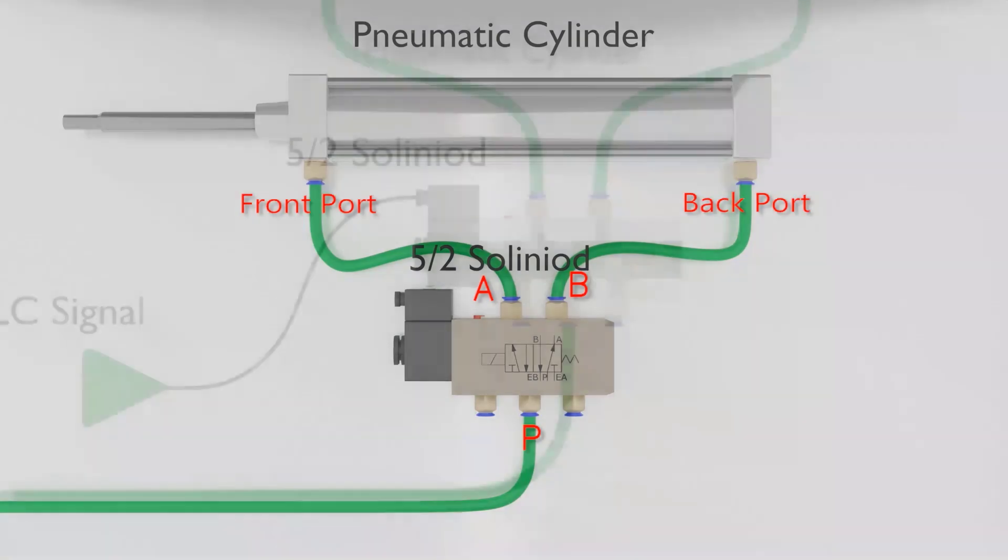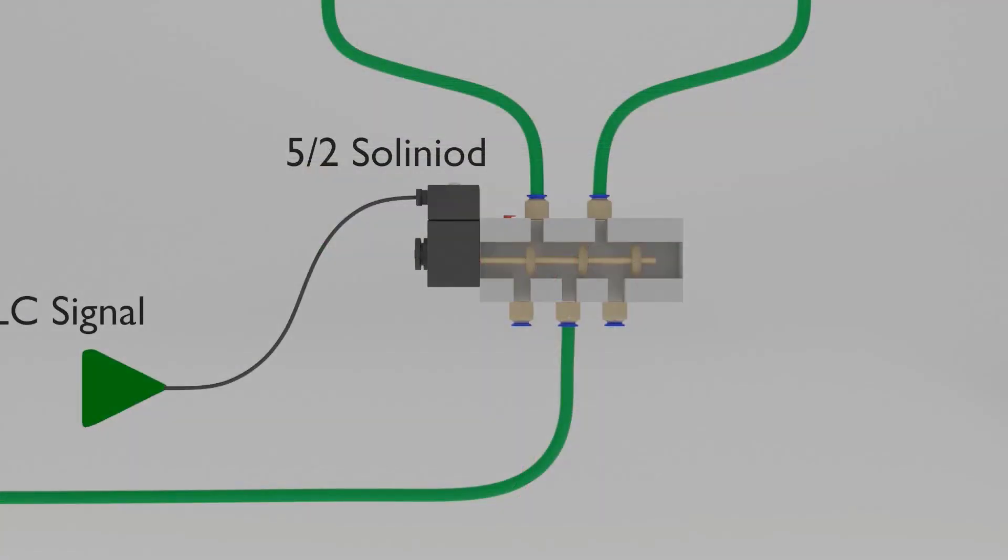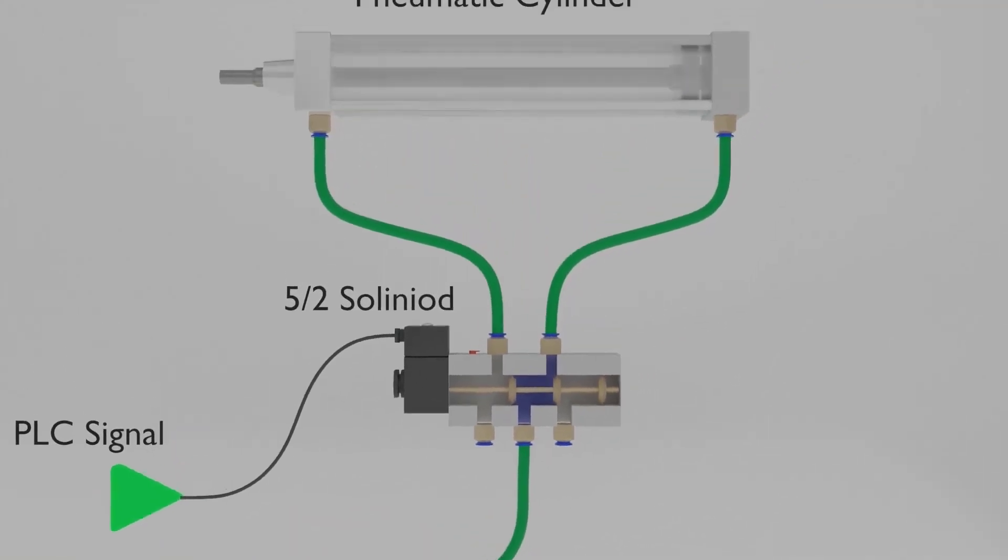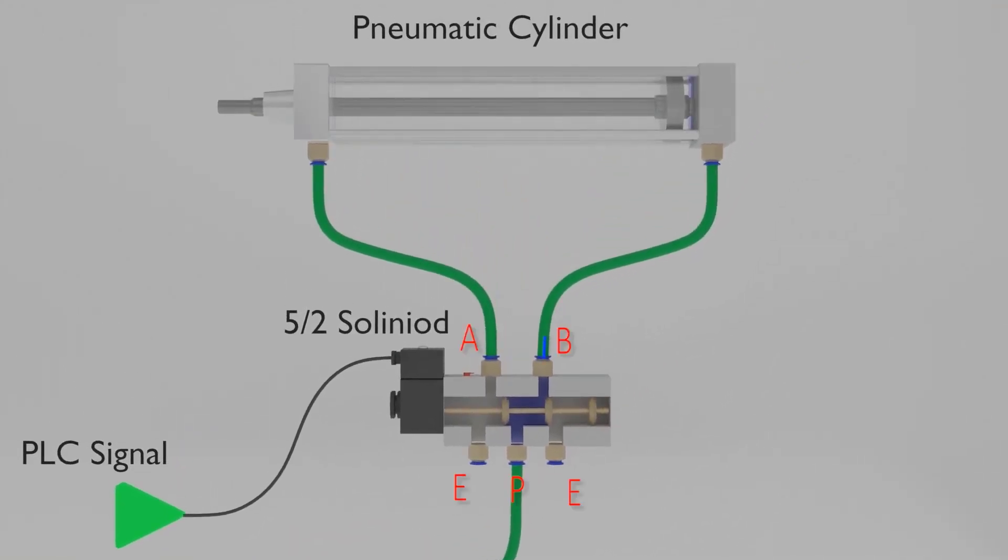When the PLC signal energizes the coil of the solenoid valve, its spool moves and links the pressure port with port B of solenoid valve and port A with the exhaust port. This way compressed air moves towards port B and through pipe it enters the back port of the cylinder. As the compressed air exerts the pneumatic pressure on the piston of the cylinder shaft, it starts to move forward because of the force of compressed air.